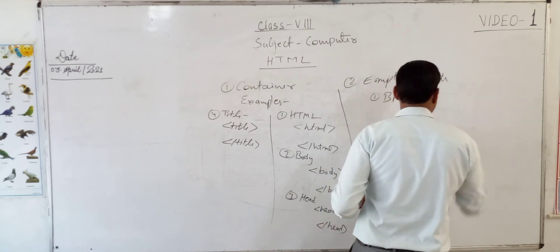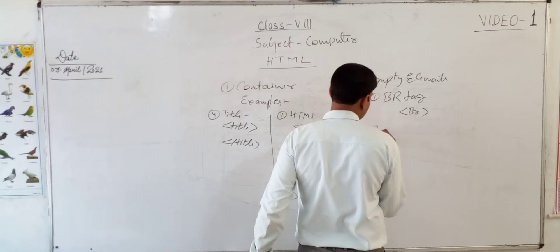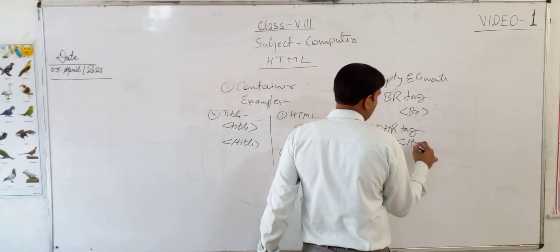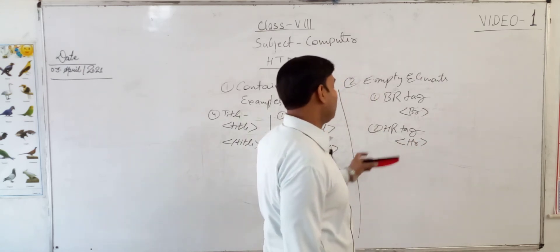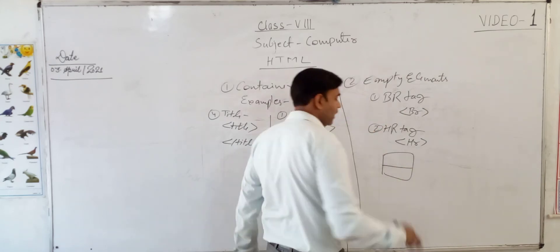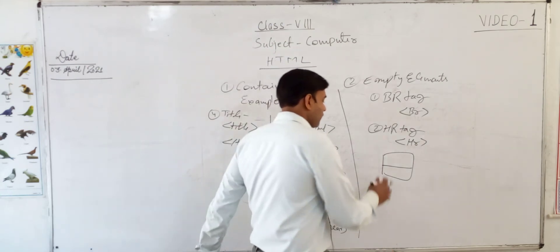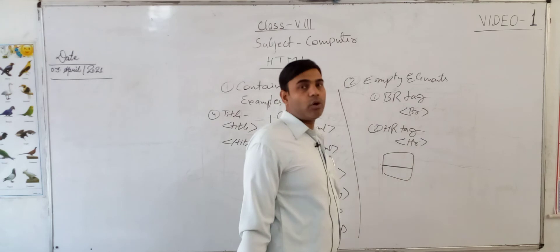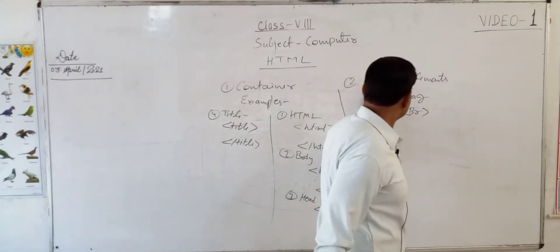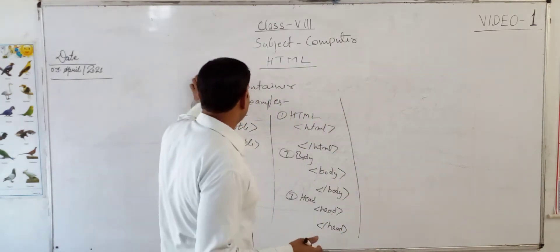Second, after BR, we have HR. HR is horizontal rule. What does HR tag do? When we use HR in the page, then it gives in browser a horizontal line like this. A horizontal line you will see from here to here. That is horizontal rule. So we discussed HR tag, BR tag and different containers.